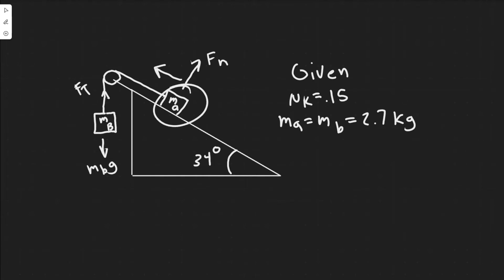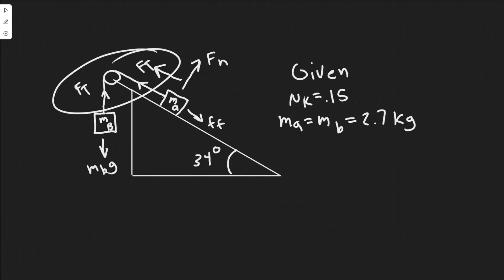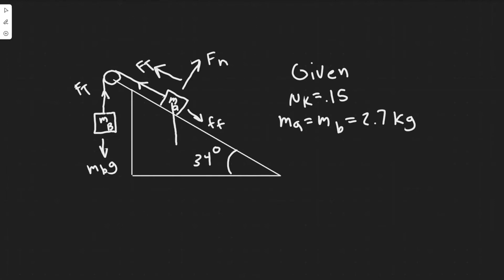Now for block MA: it has a normal force acting along the y-axis, a force of friction acting opposite to its direction of travel (so pointing down the incline since it travels up), tension FT pulling it up the incline, and gravity acting straight down. Since MA and MB are equal, we can just write m for the mass.